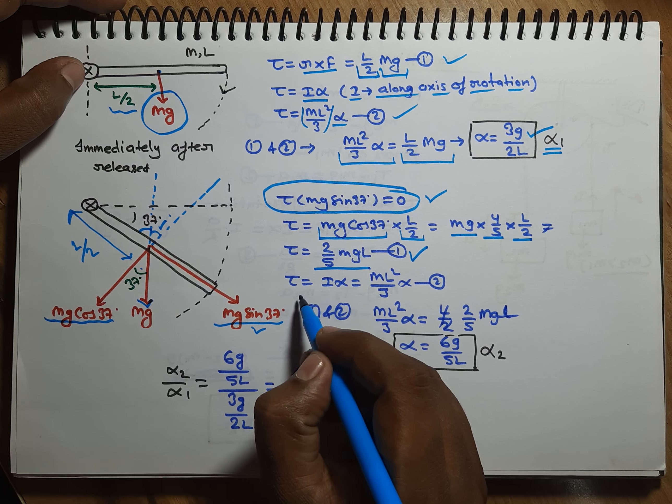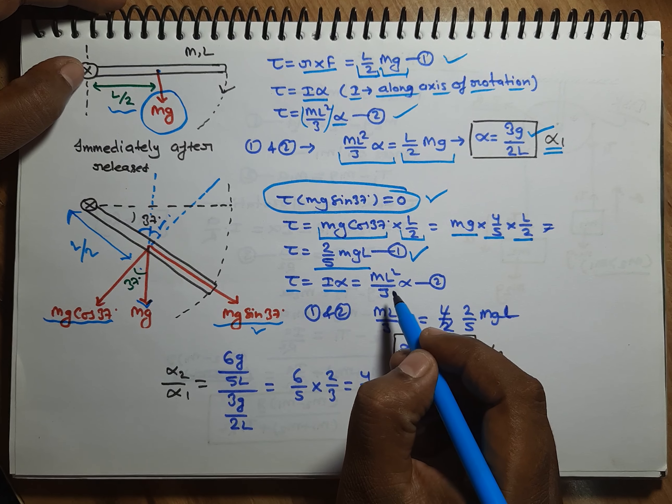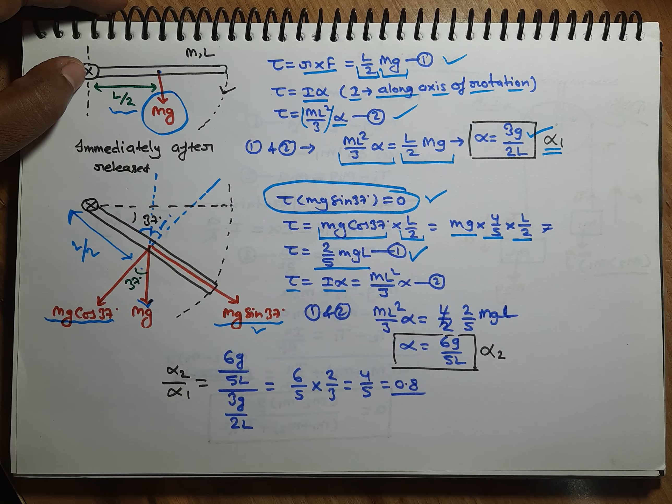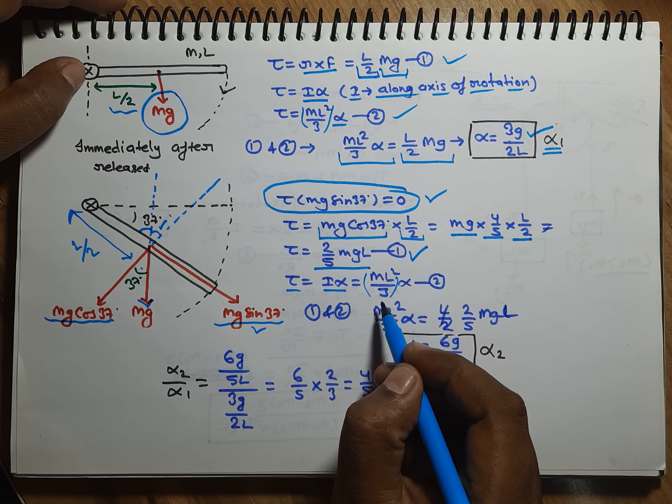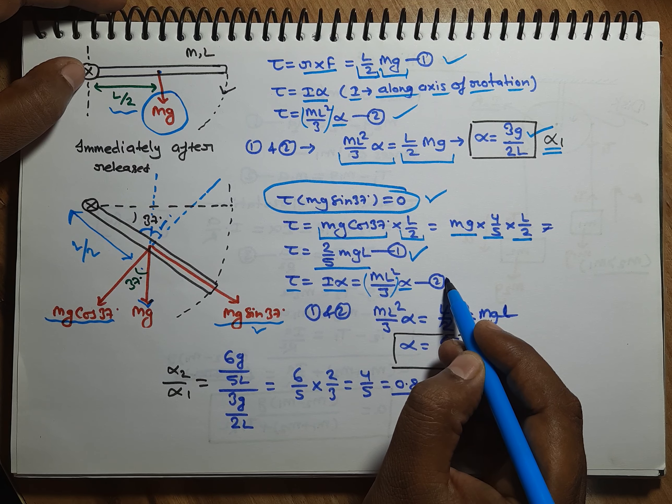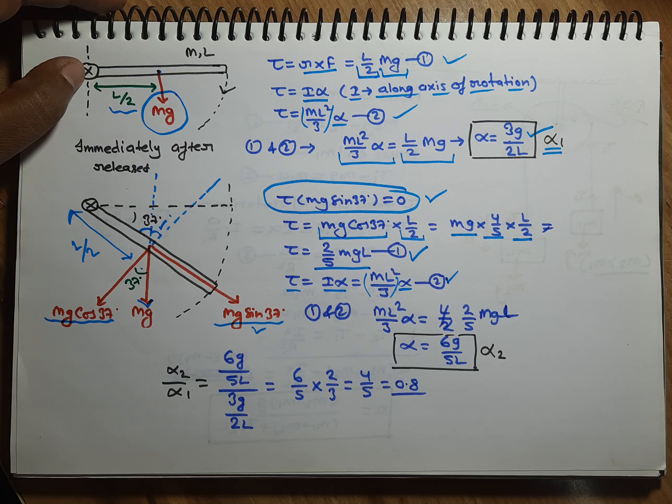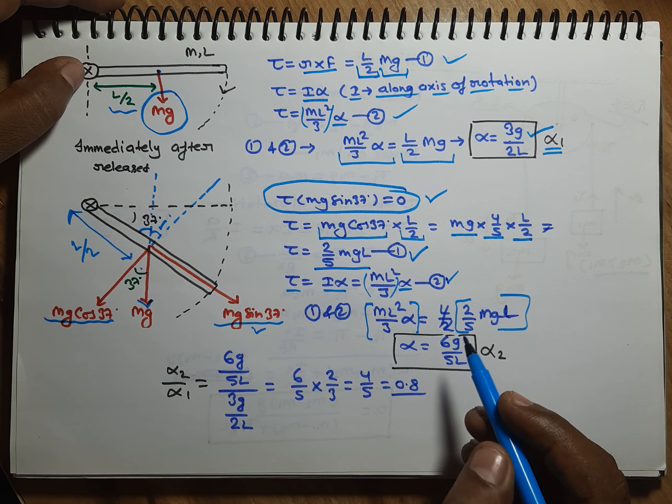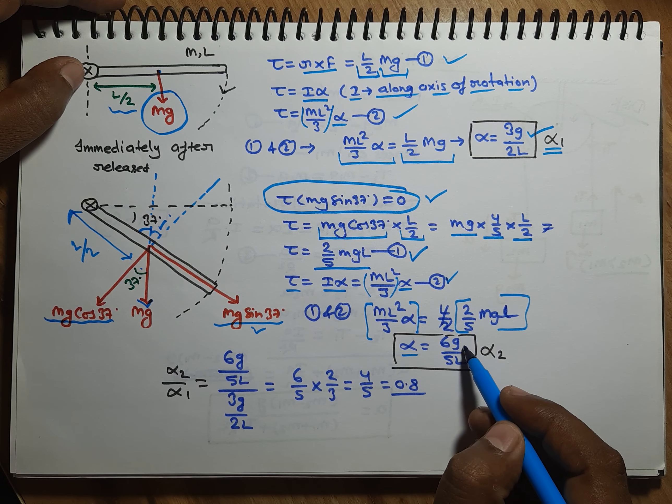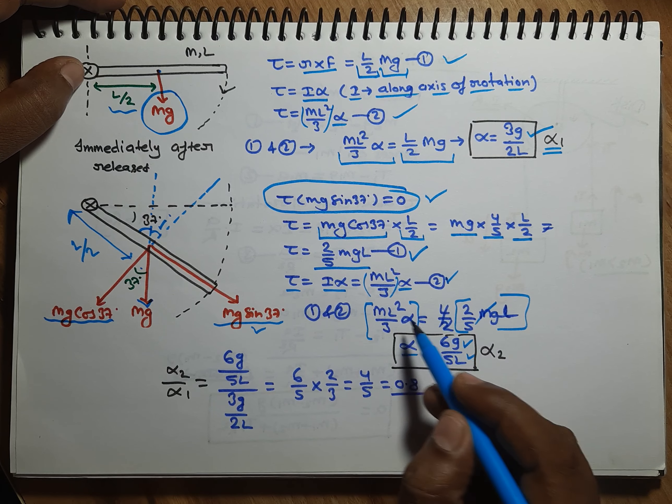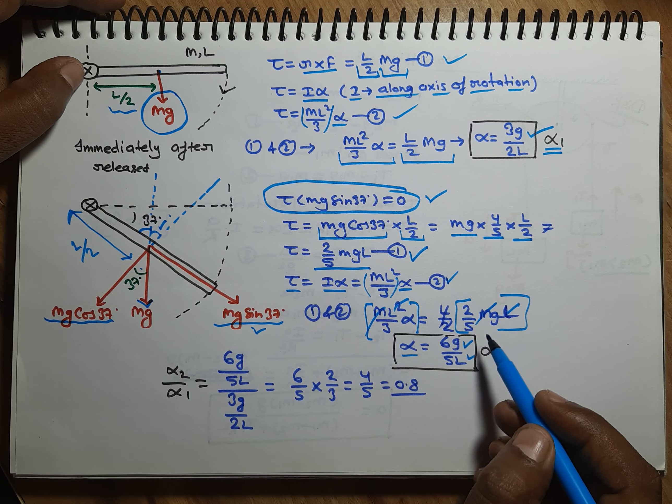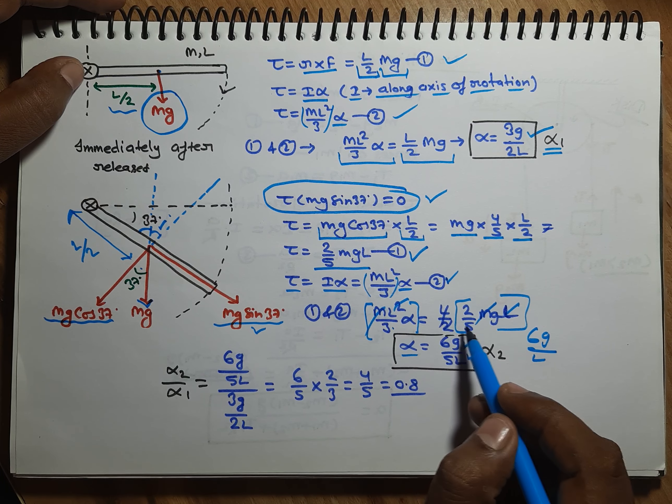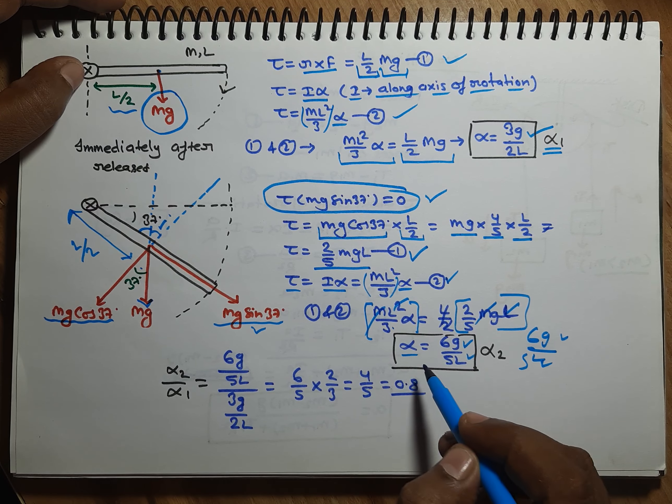Second, if we talk about equation: Torque equals I·α. Still no change. Why friends? Axis of rotation is the same. Its value will be ML² by 3 into α. So, ML² by 3 into α equals 2 by 5 MgL. L cancels out, this 3 goes there and becomes 6, G is there already, L goes below, and 5 is already available. So 6G by 5L. Alpha becomes 6G by 5L.